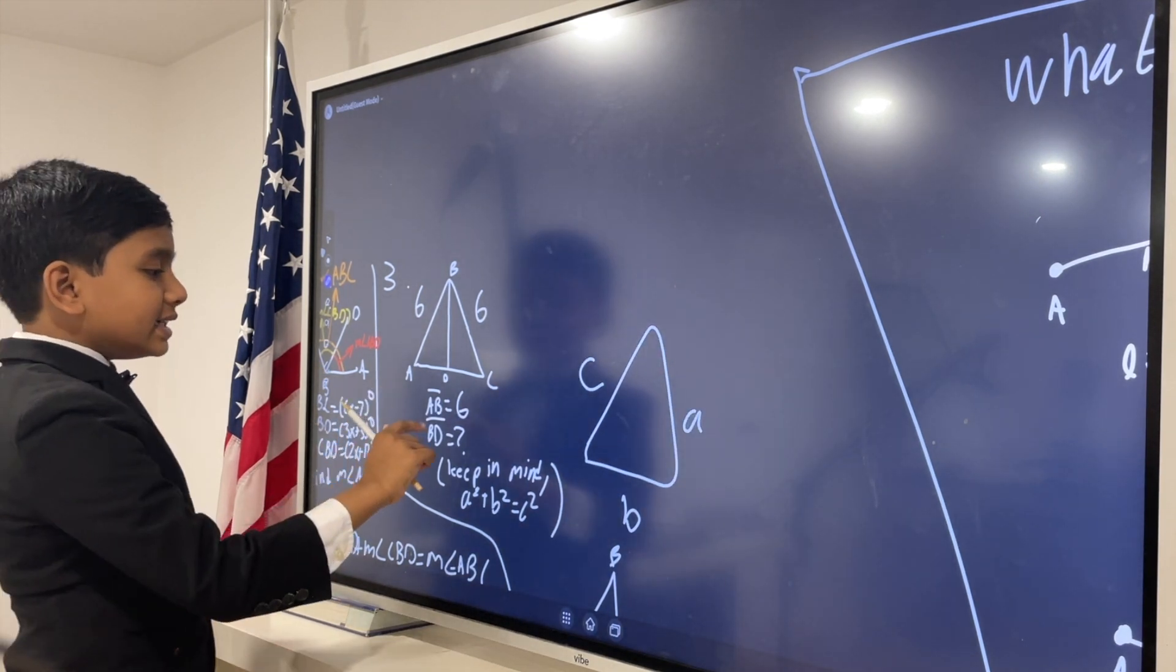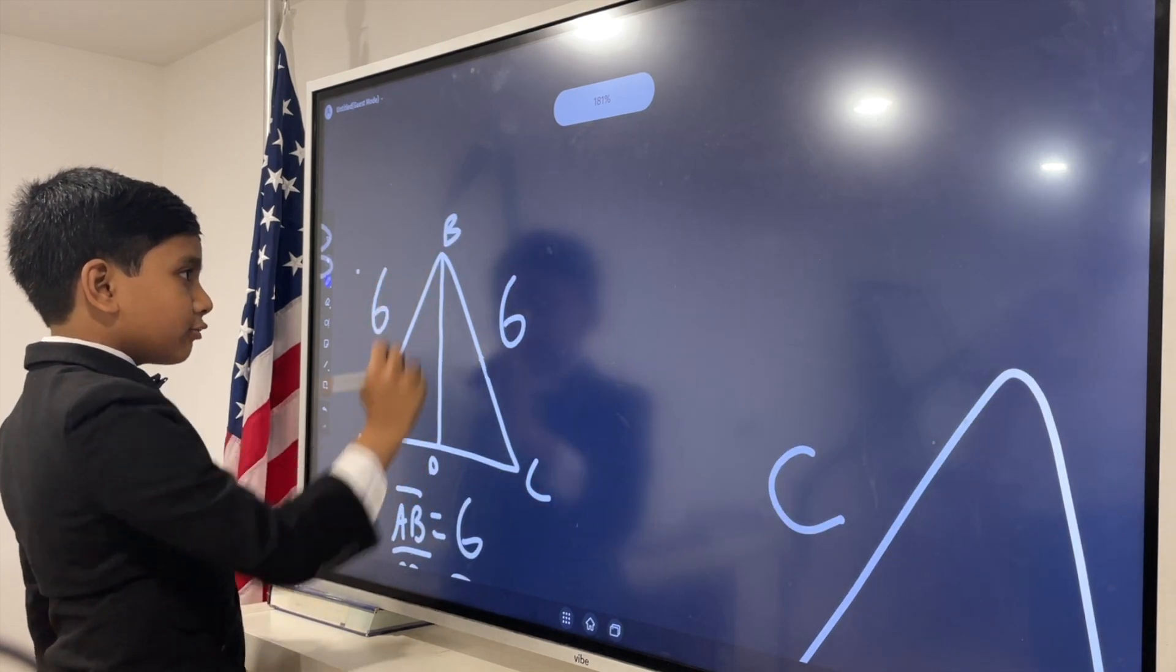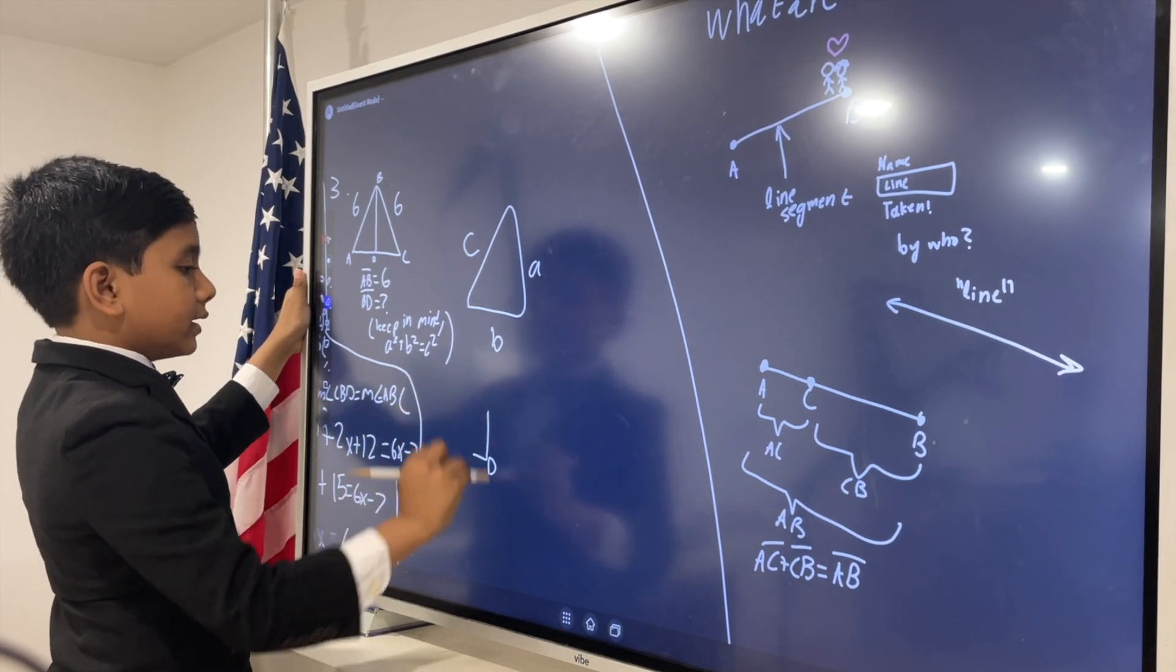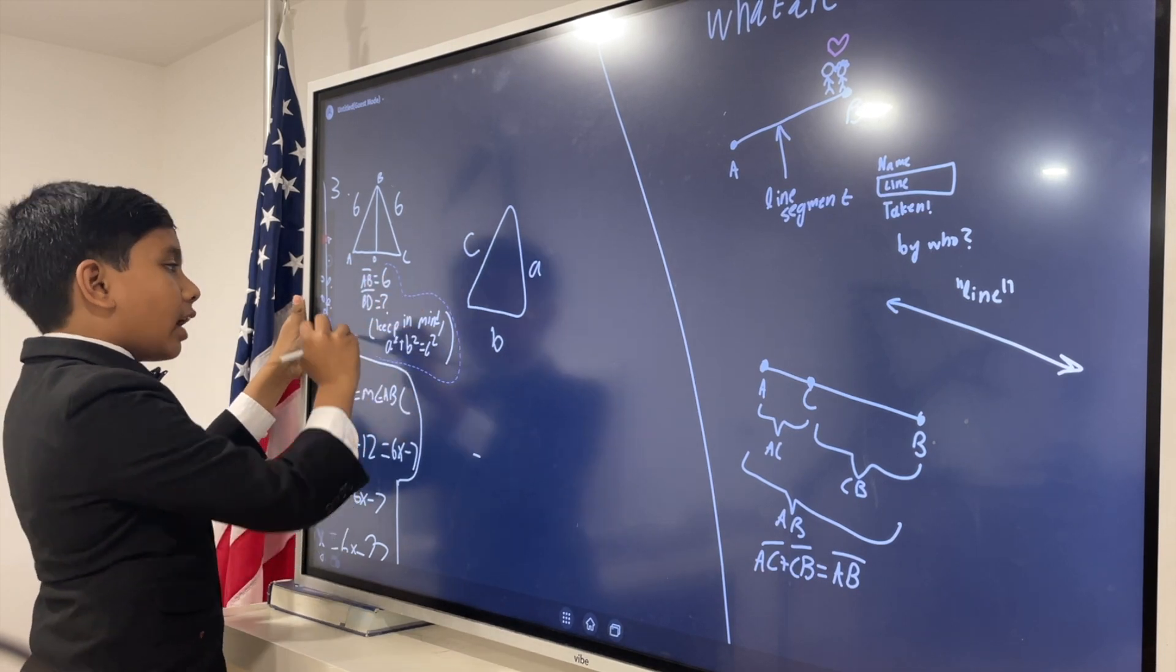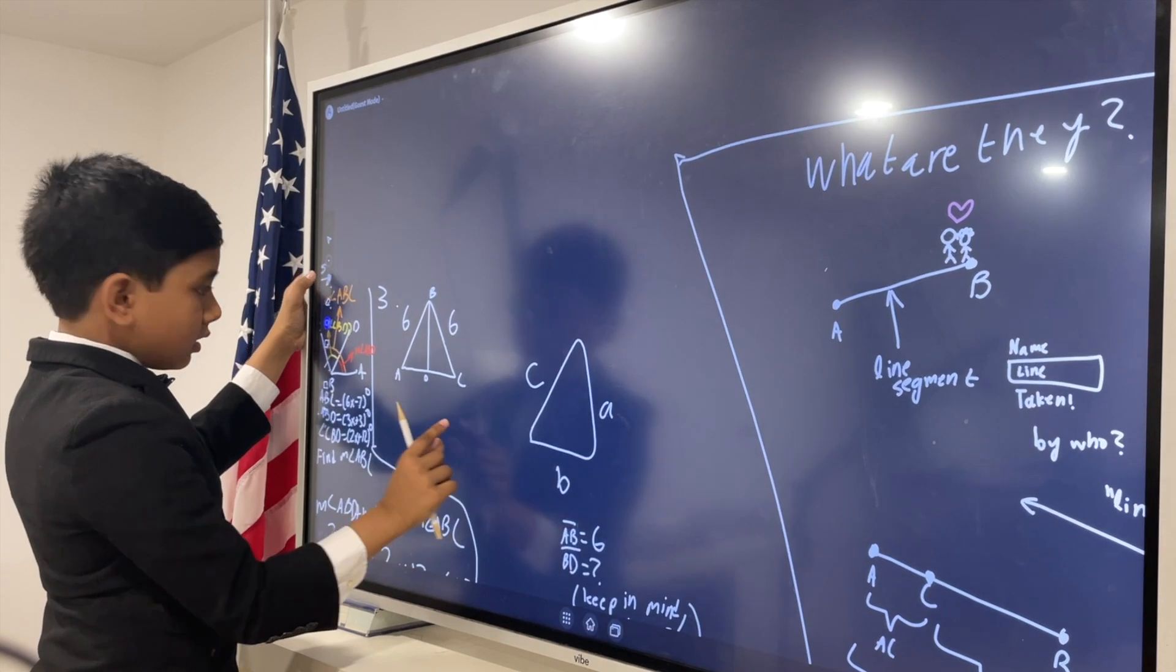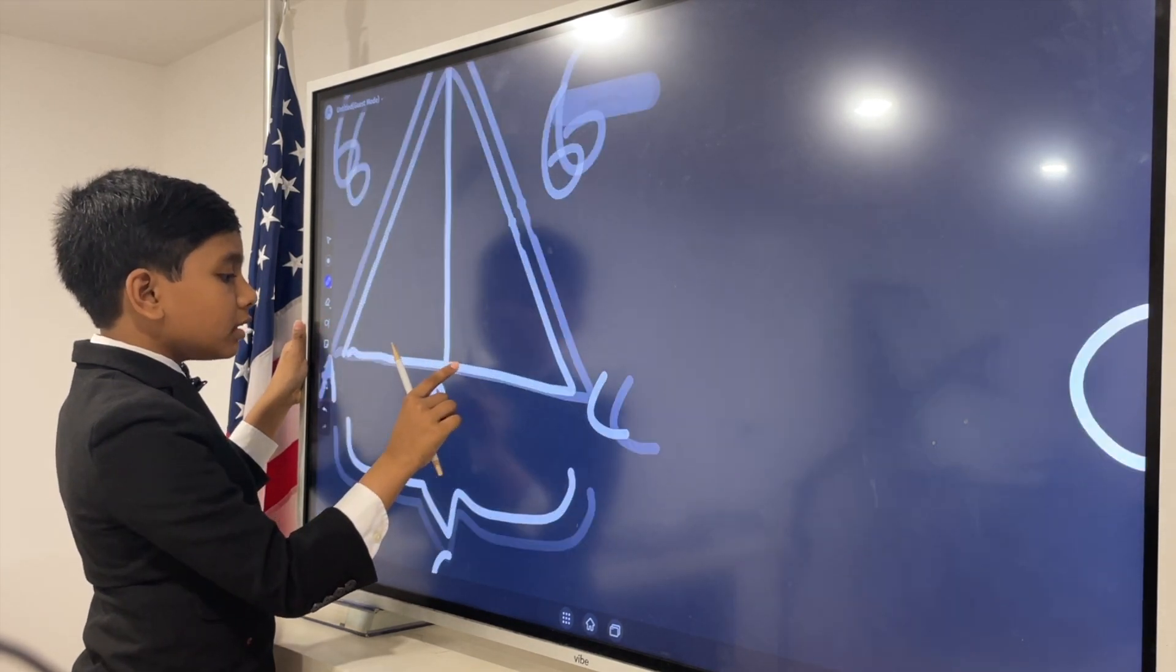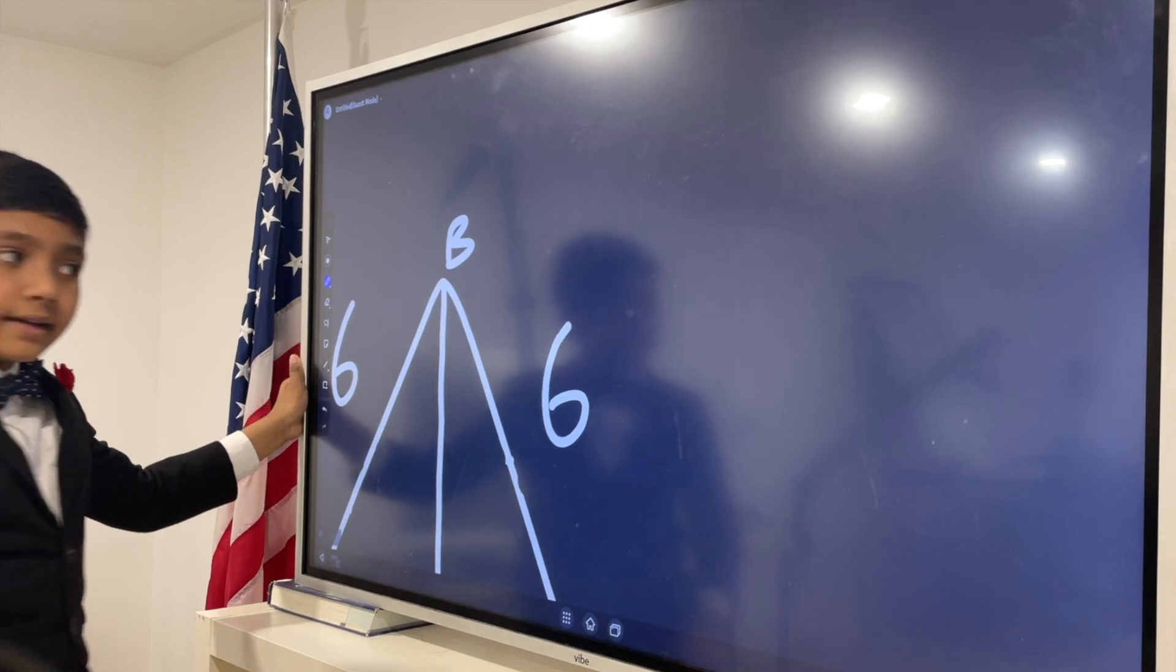So, since AC is 6, and D is right in the middle, bisecting—this is a bit of a crowded space. I'm going to make sure our diagram has space so I can write on it. So, we know this whole thing is 6, and we know that the line BD is bisecting this triangle.